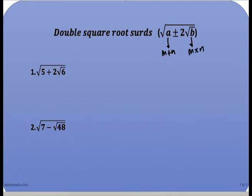So we have to think of two numbers that when we add them together it will give us a, and when we multiply the two numbers together will give us b. Not forgetting that we have a 2 in front of the square root of b. So if we have those two numbers, our answer for the solution will be the square root of m plus or minus the square root of n.